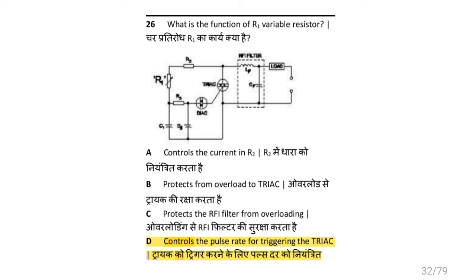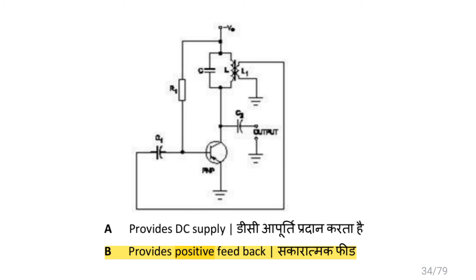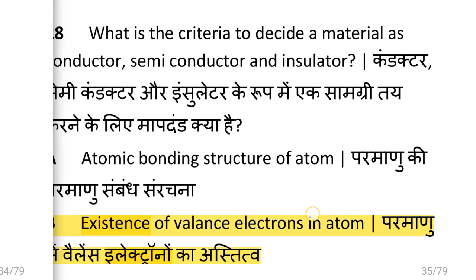What is the function of R — variable resistor? i.e. it controls the pulse rate for triggering the triac. What is the purpose of connecting L through C1 to the transistor base? i.e. provides positive feedback.